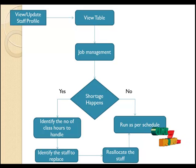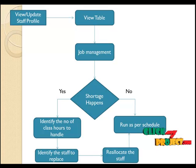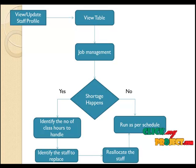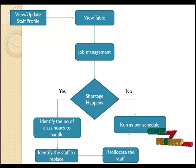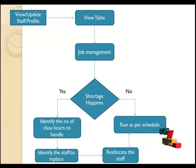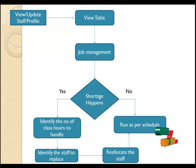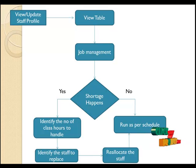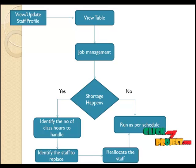In job management we are going to check if anyone is absent on a day. If yes, we identify who the absent person is by using their ID. We then identify how many hours the absentee is scheduled for that day and which specific hours those are. Then, by using the ID, we view which other staff members are free for the day. We then reallocate the staff randomly. If no shortage occurs, the timetable runs as per the schedule.